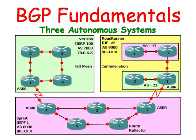In the next few videos, we're going to be using the diagram shown to display our internet. Verizon is shown in green, Sprint is shown in purple, and Roadrunner is shown in yellow. The Verizon Autonomous System will be using the EIGRP protocol. It will also be using Autonomous System 7000, and will have public IP addresses of 70.0.